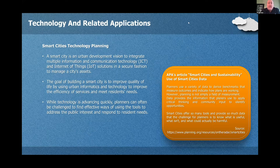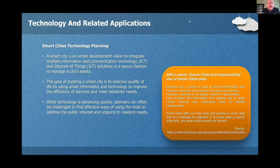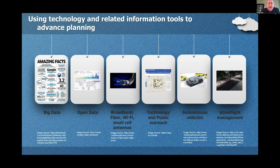Technology and related applications. The APA has added this section — they want us to be familiar with smart cities technology. You don't have to be an expert, but know what a smart city is, why it's important to planners, and what tools or technology you can use in your community to support it. Key things include the importance of data, open data, fiber networks, broadband, technology and public outreach, and autonomous vehicles. For example, smart street light management where lights only turn on when movement is sensed, saving electricity.